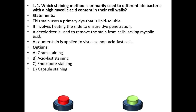First question. Which staining method is primarily used to differentiate bacteria with a high mycolic content in their cell wall? Statements: This stain uses a primary dye that is lipid soluble. It involves heating the slide to ensure dye penetration. A decolorizer is used to remove the stain from cells lacking mycolic acid. A counter stain is applied to visualize non-acid fast cells.